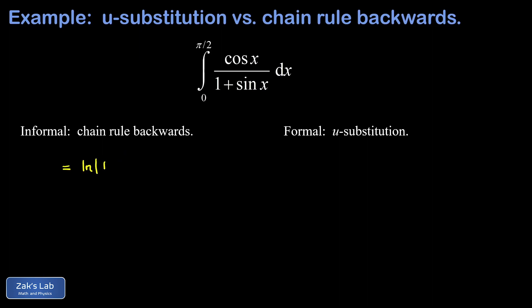If I do the natural log of 1 plus sine x, and I imagine differentiating that, it gives me 1 over 1 plus sine x, and then the chain rule says, well, now you have to tack on the derivative of 1 plus sine x, which is cosine x. So this is always going to work if you run into an integral where you have the derivative of the denominator just sitting there in the numerator.